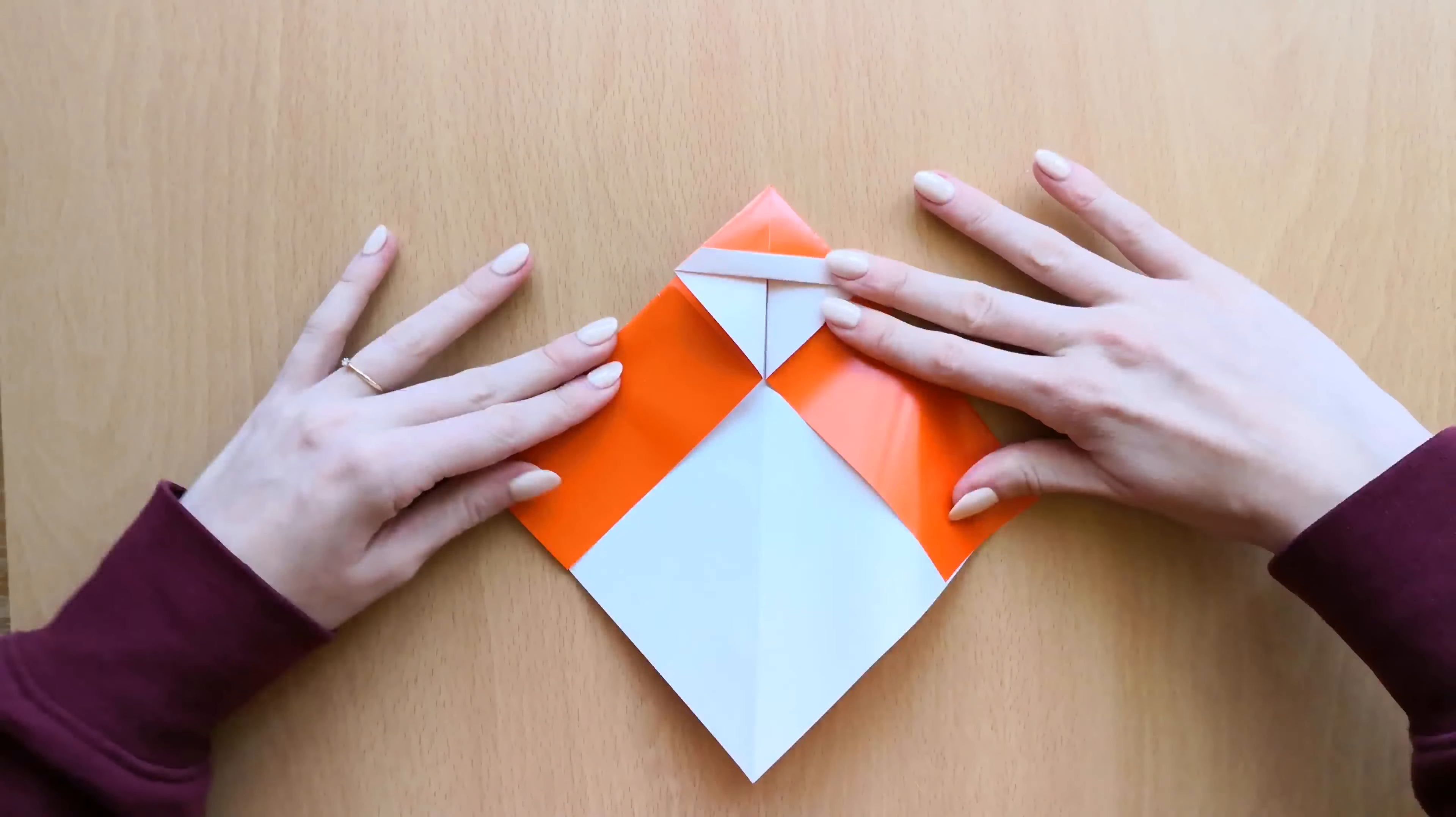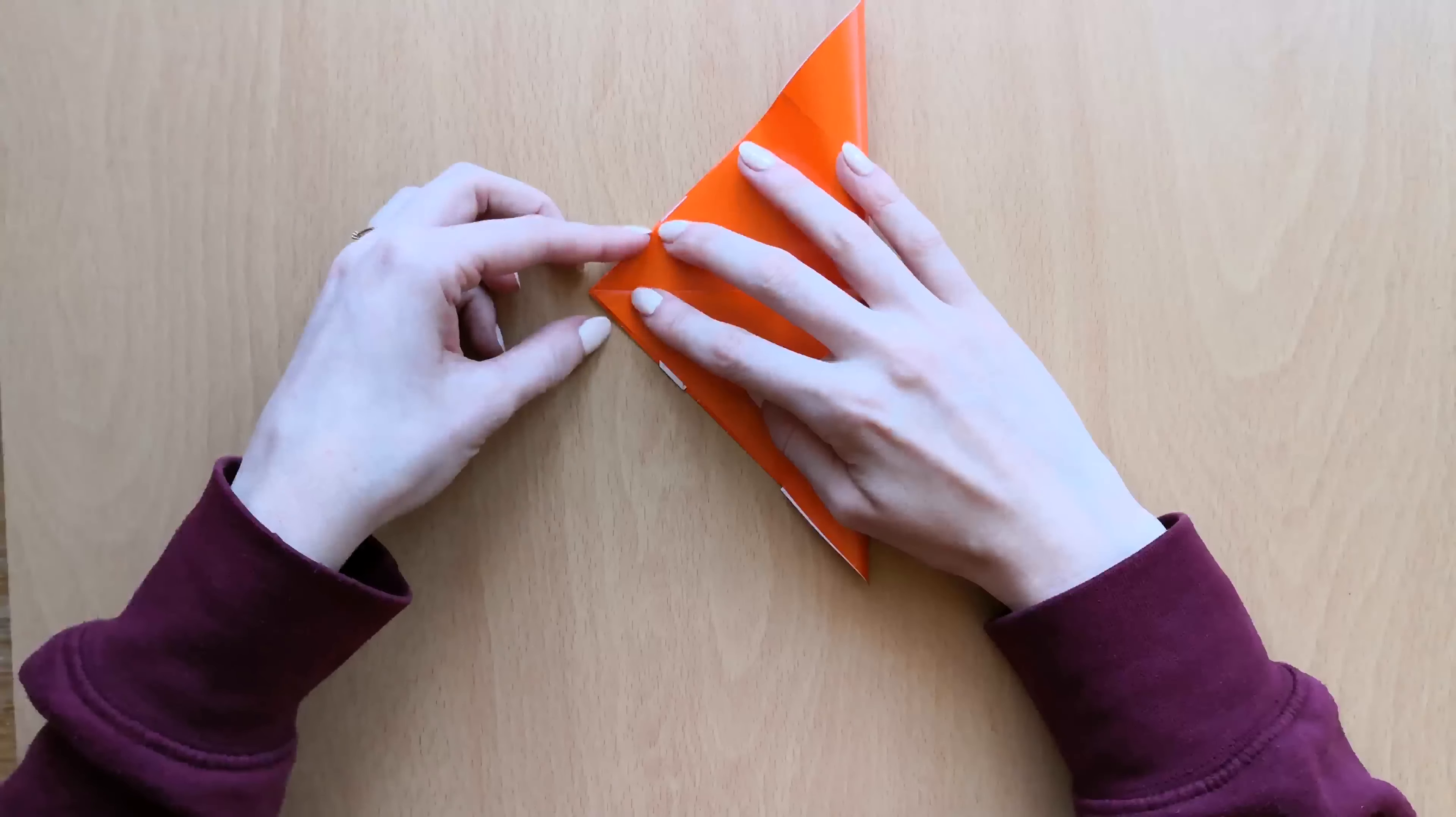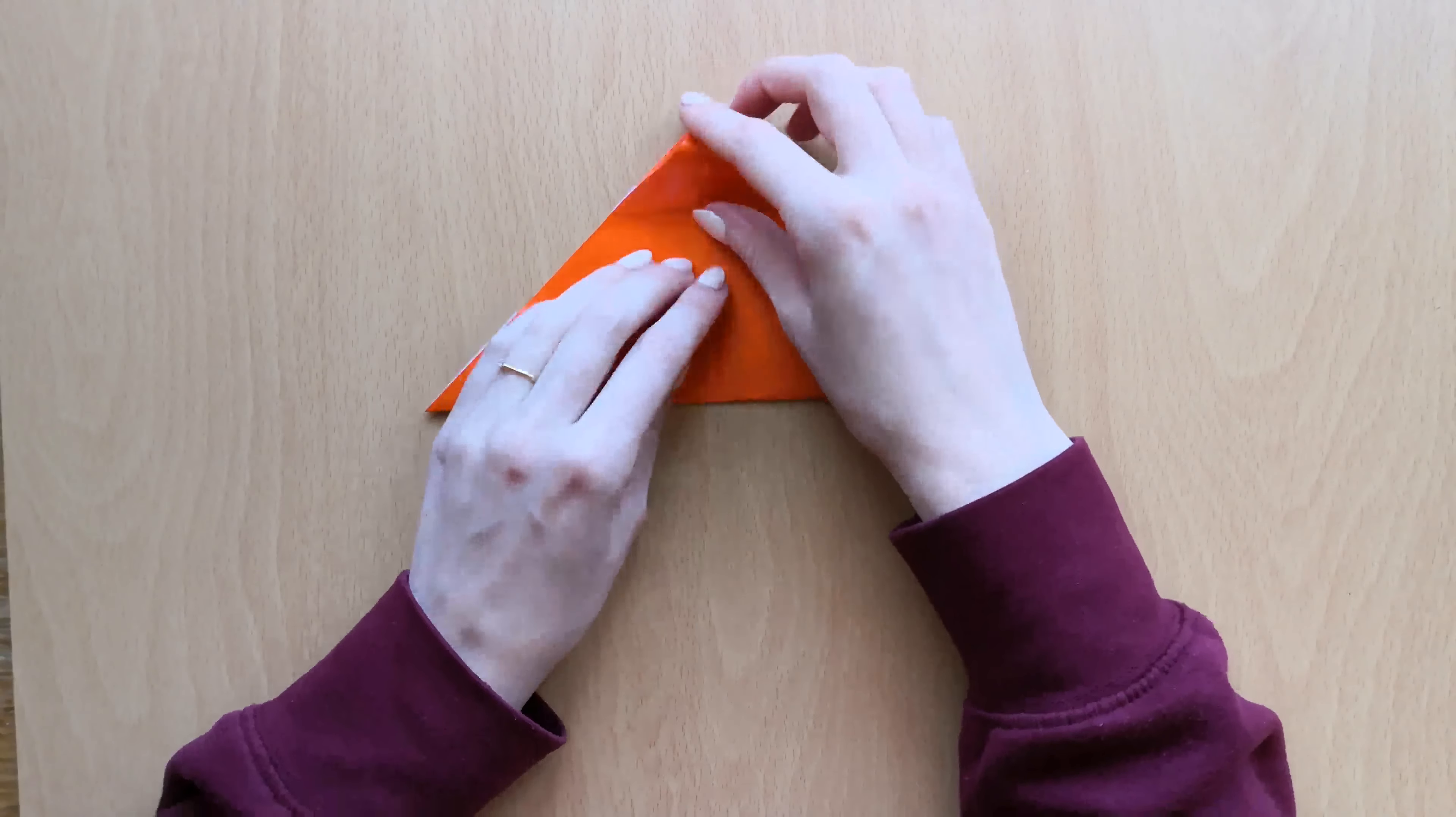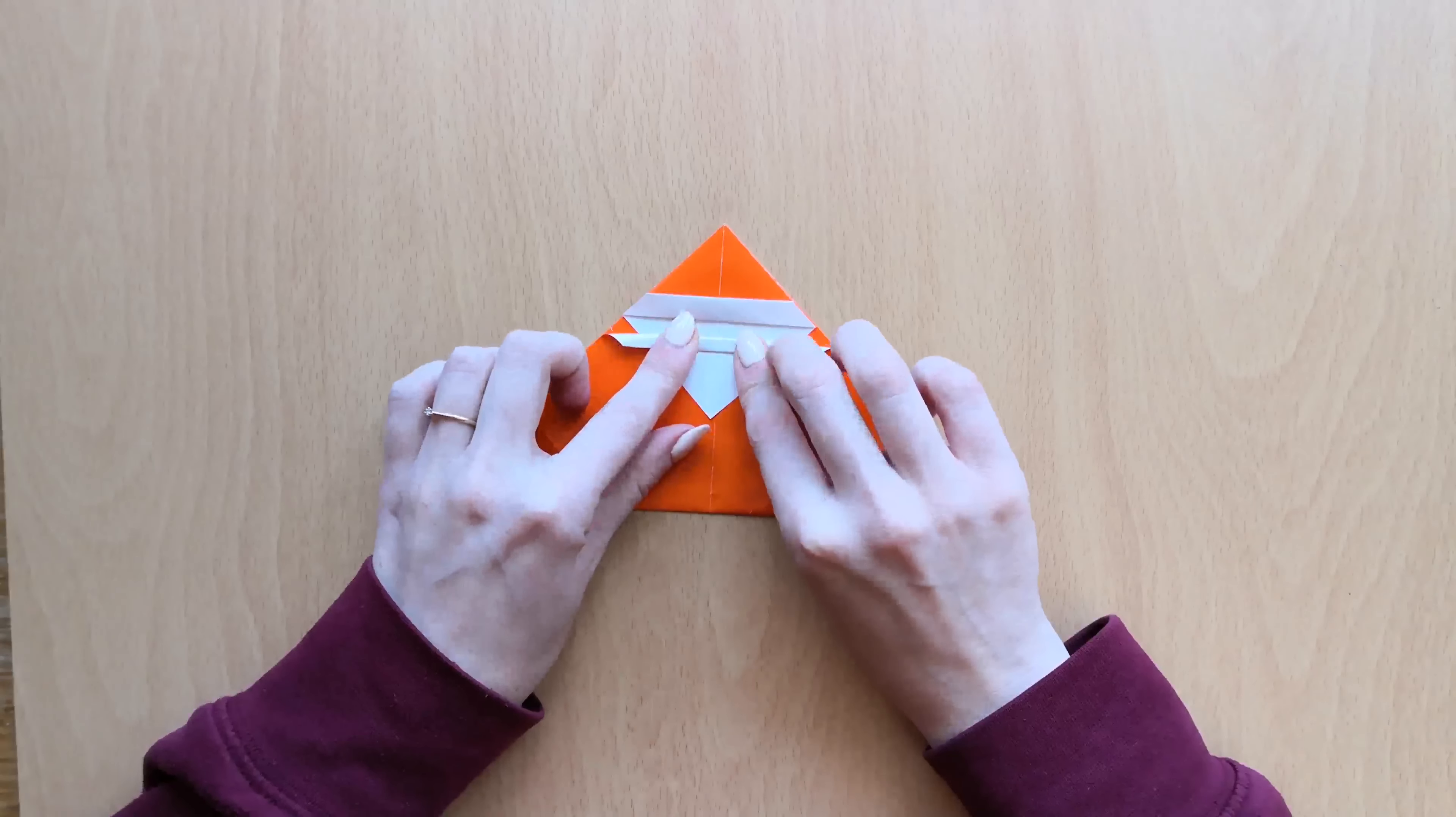In the next step we'll fold this point over to this point here. So we'll fold it in half. And we'll fold it to the line here so that these lines are aligned. Once you have it, press it down. And then just roll it a little bit down. It doesn't have to be a big line.